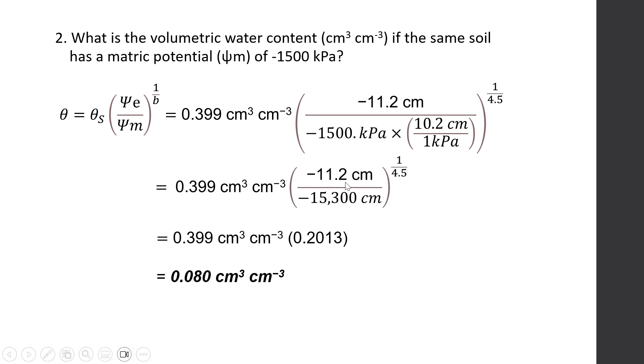Plug in the values and we will get the volumetric water content of the same soil at minus 1500 kPa. Based on the calculation, the volumetric water content of the soil at this matric potential is 0.080 cubic centimeter per cubic centimeter.